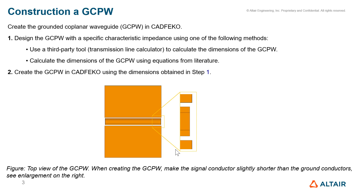When creating the grounded coplanar waveguide, make the signal conductor slightly shorter than the ground conductors. In the enlarged view of this structure you can clearly see the signal conductor is slightly shorter than the ground conductors.